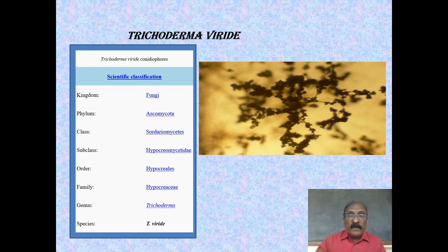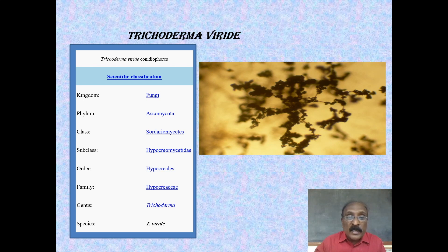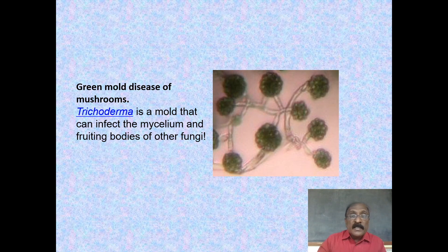Trichoderma viridae is a fungus widely used as a fungal insecticide or biopesticide. It belongs to the kingdom Fungi, phylum Ascomycota, class Sordariomycetes, subclass Hypocreomycetidae, order Hypocreales, family Hypocreaceae, genus Trichoderma, and species viridae. It is also called green mold disease of mushrooms. While in culture, it appears green in color. Trichoderma is a mold that can infect the mycelium and the fruiting bodies of other fungi.